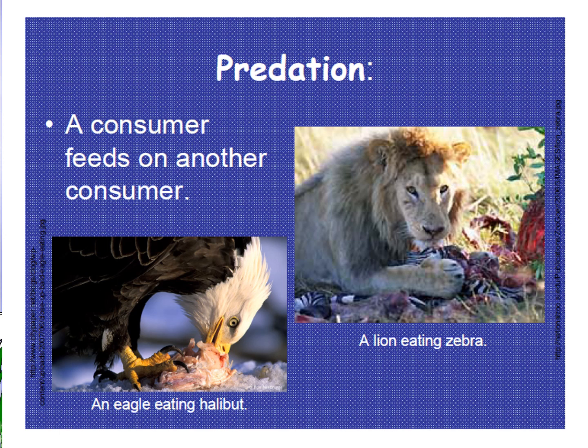Predation is another oppositional relationship, where a consumer feeds on another consumer — predator and prey. Examples include a lion eating a zebra and an eagle eating a halibut. In predation, consumers eat other consumers.